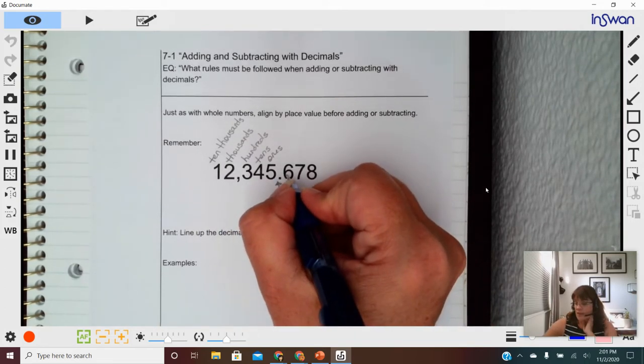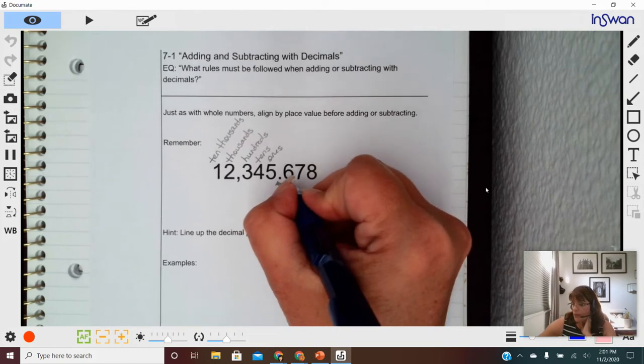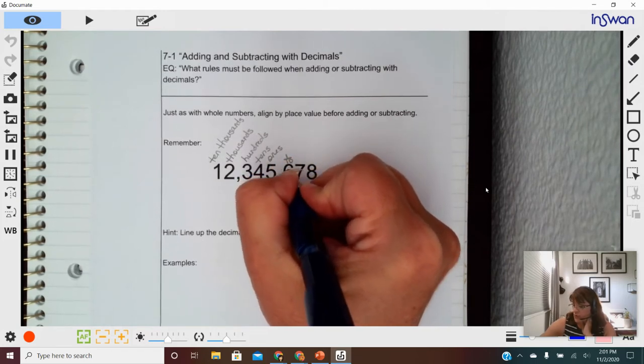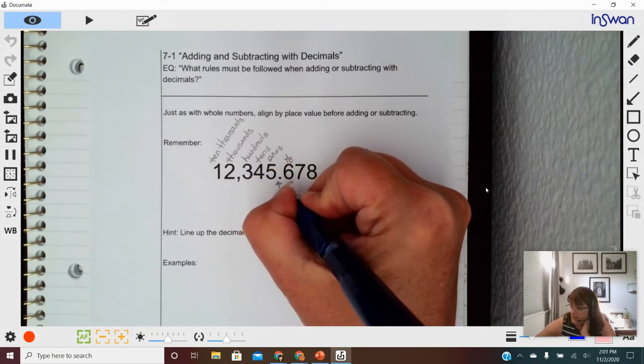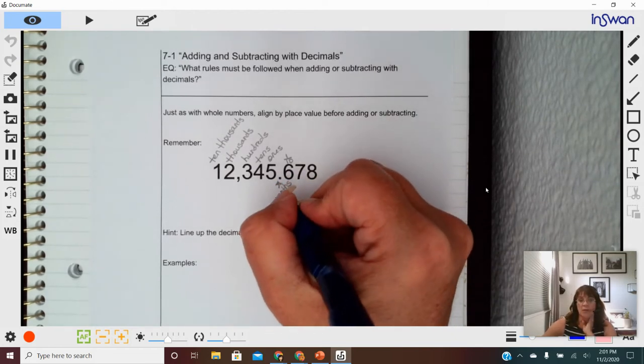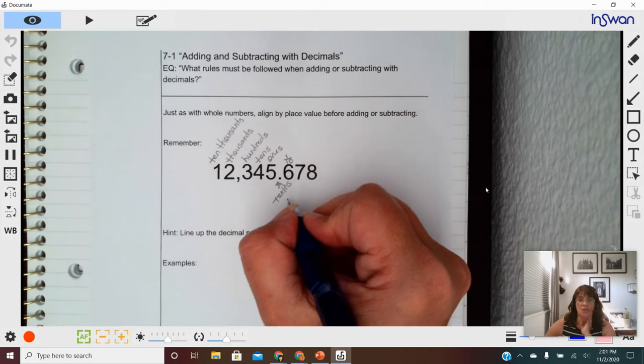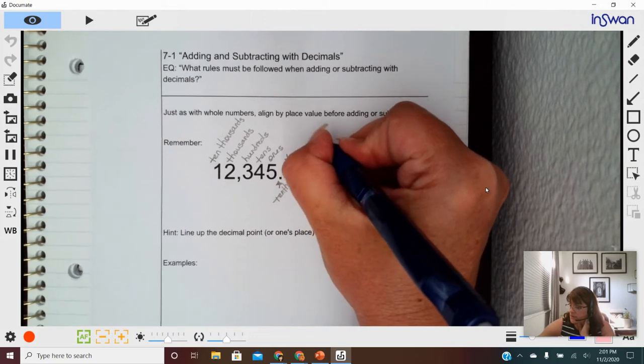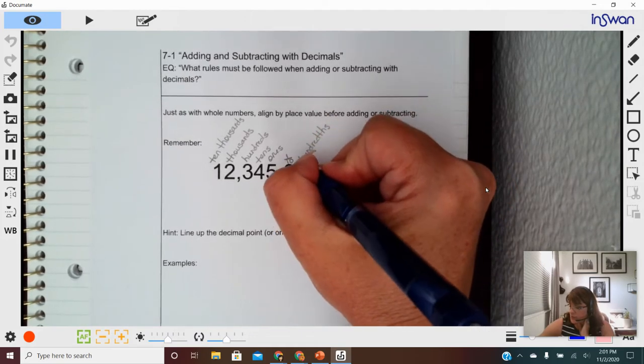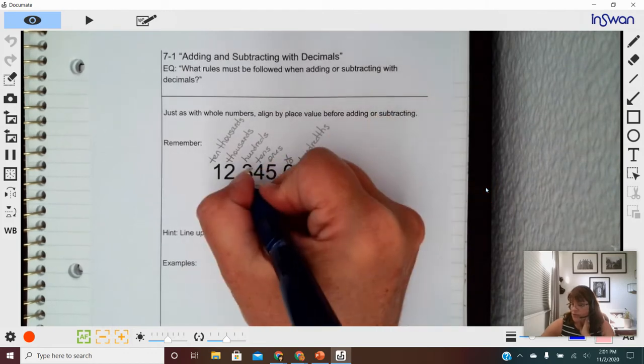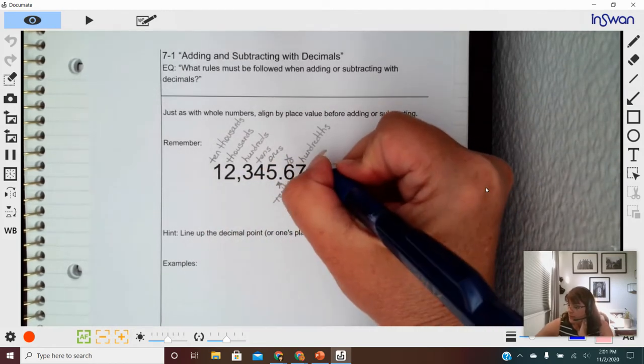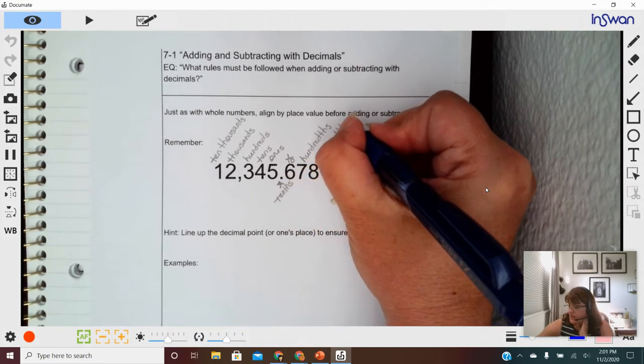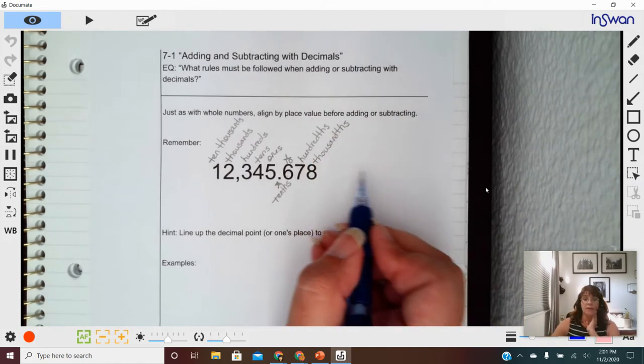But what I want you to really notice is when we get here, now we're talking about pieces. We're talking about fractional values. So six is in the tenths place. And when you hear me say it, I'm going to overemphasize the th. Seven is in the hundredths place. Now notice that difference between hundredths and hundreds. Not the same thing. And again, we could keep going. Thousandths place. And we could keep going and going.